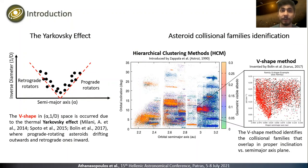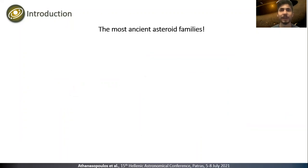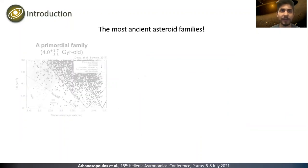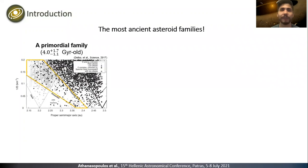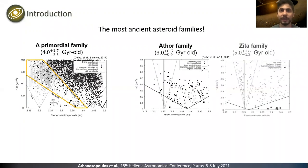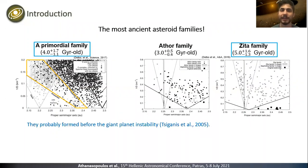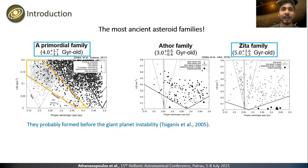Based on the V-shape method, two primordial and one ancient family have been discovered. The first is a primordial family where only the left side of the V-shape has been identified. The second is the Opha family and the third is the Zeta family. The first and the latter could be as old as our solar system, meaning that they formed before the giant planets' instability. These families, located in the inner main belt, could give us insights into the origin of the primordial asteroid belt, the size distribution of the planetesimals, and solar system formation in general.